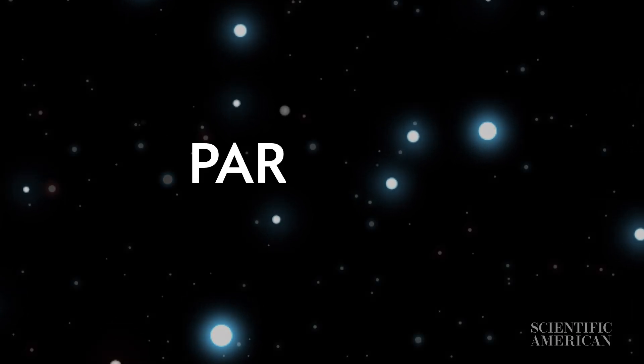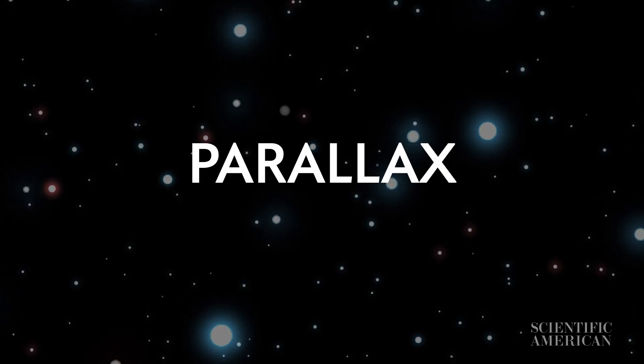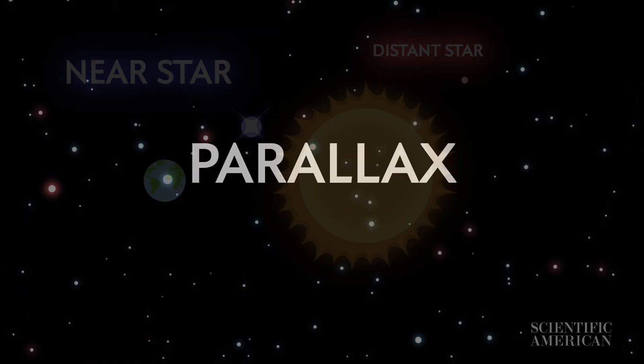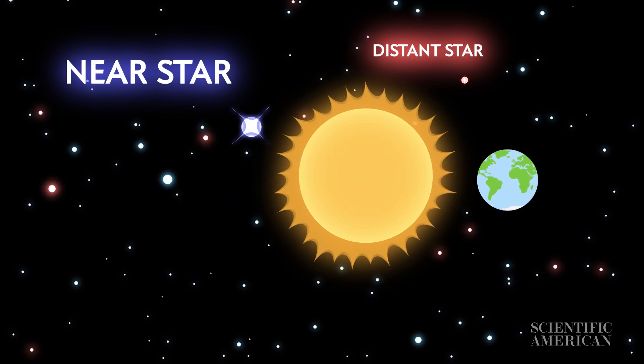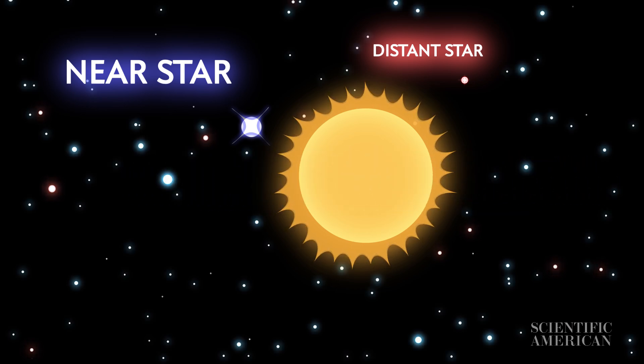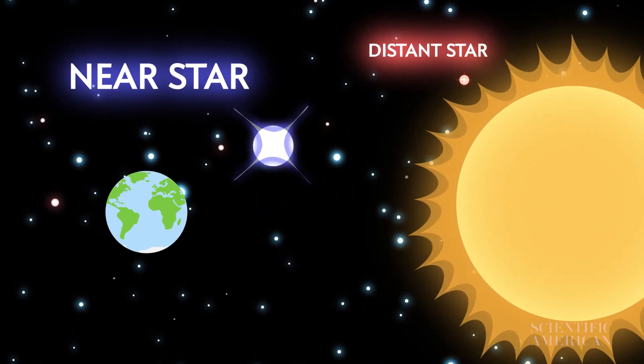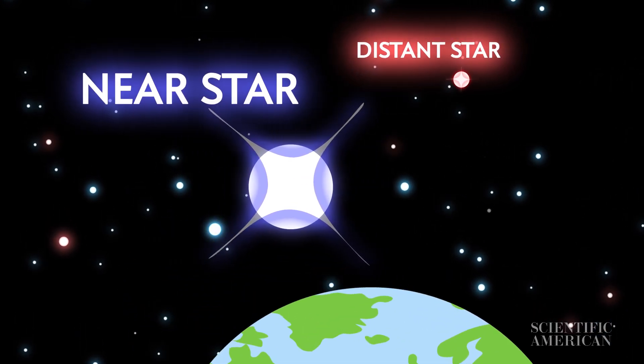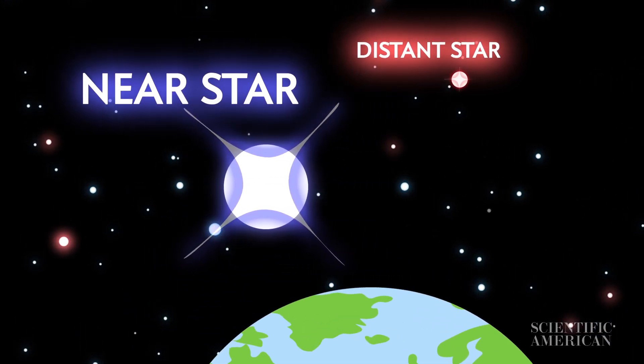This effect is called parallax, and we can use it to measure large distances. As our planet goes around the sun, the stars appear to shift back and forth relative to more distant stars. The farther away a star is, the less it moves.